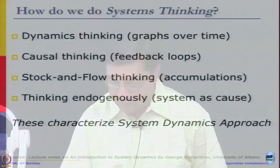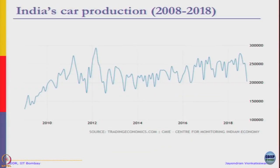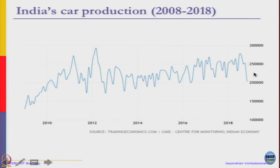These characterize the system dynamics approach. To give a brief example of what I mean by dynamics — we look at behavior over time. This is from tradingeconomics.com on India's car production over the last 10 years. You can see there has been a steady growth and you can also observe cycles — standard cycles of similar sizes which can be used to anticipate. So if you are the manager in charge and the last quarter's sales are going to dip, you better be prepared to bounce back.